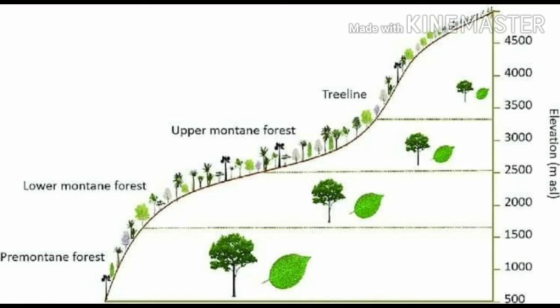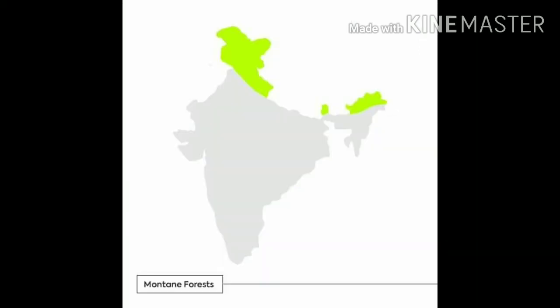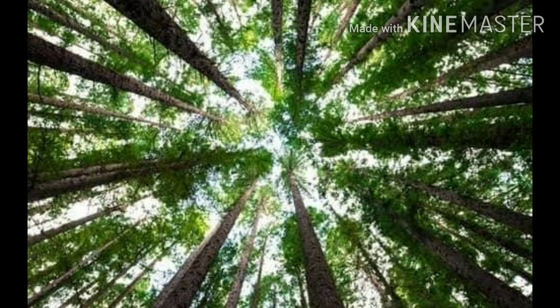We can observe tropical deciduous forest at the Himalayan foothills. Wet type of forest is found at a height of 1000 to 2000 meters, where broadleaf trees of evergreen varieties are found in the wet temperate forest.